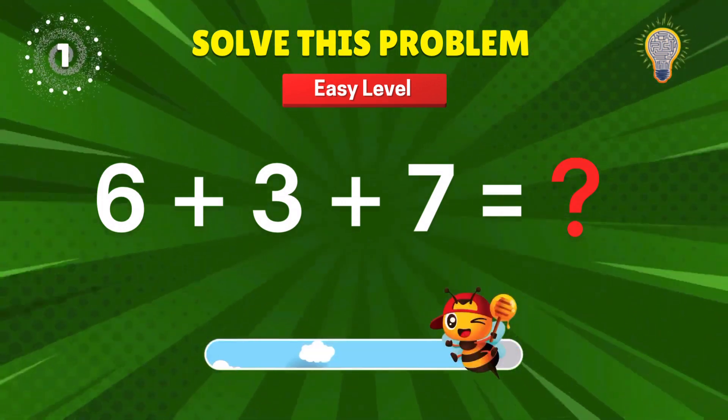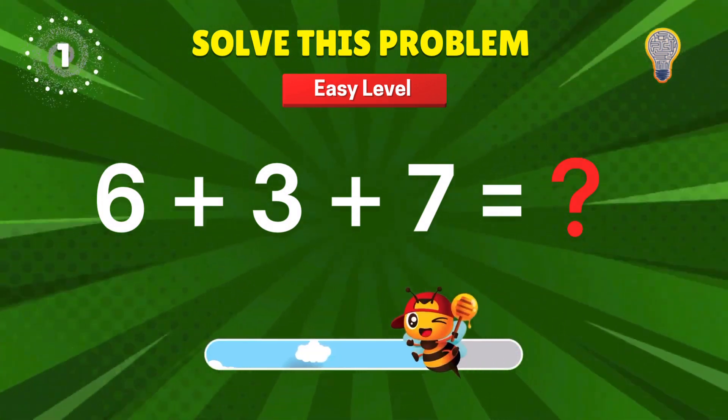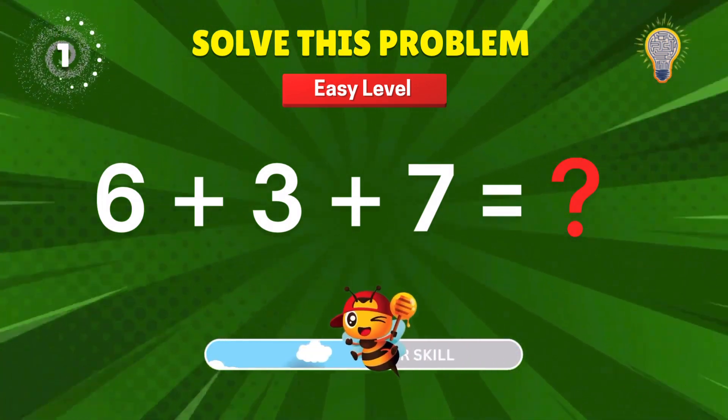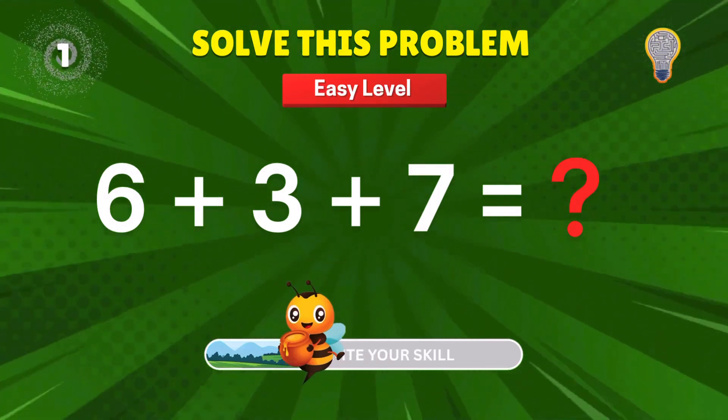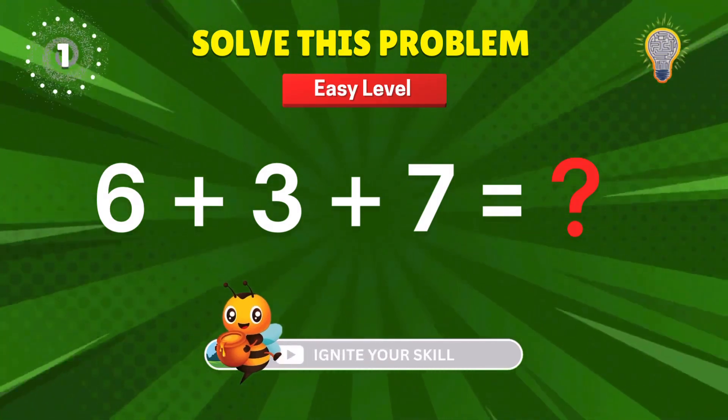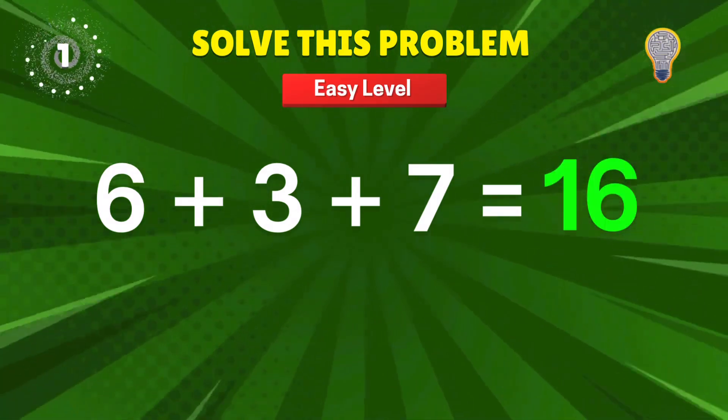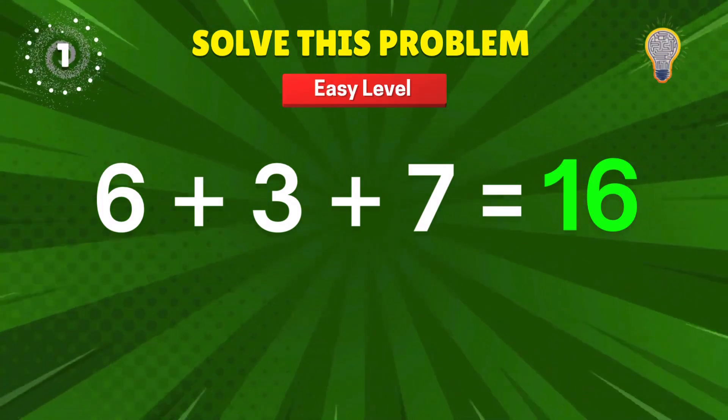6 plus 3 plus 7? If you get this wrong, we're calling your calculator. 16. Sweet 16. That's 1 point for you.